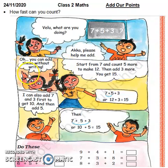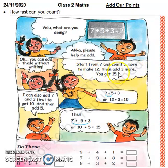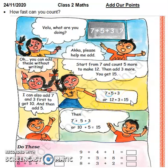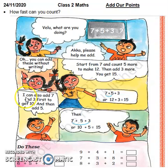You can add these without writing. Start from 7 and count 5 more to make 12, then add 3 more — you get 15. So 7 plus 5 plus 3, or 12 plus 3, is equal to 15. This child says: I can also add 7 and 3 first to get 10, and then add 5.